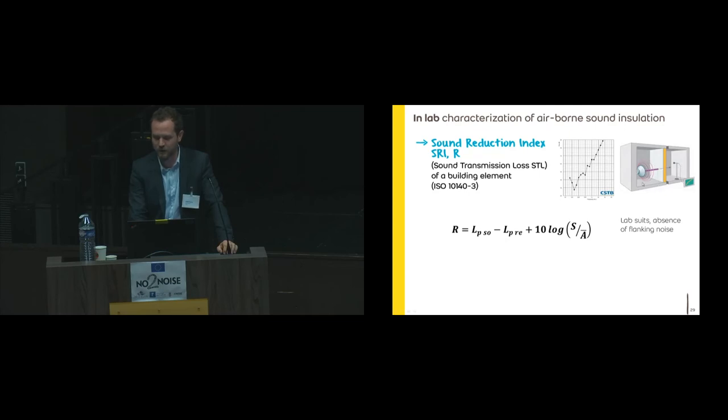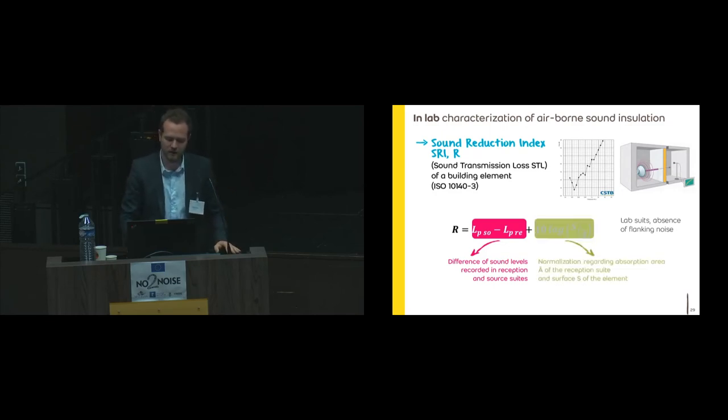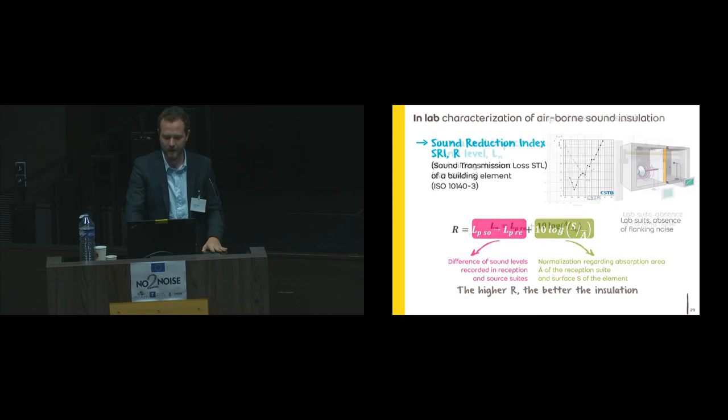How do you do these calculations? You have a source in a reverberant room and a microphone, and you measure the pressure in the two rooms—in the source room and in the reception room. You do the difference of the level between the two noise levels in the two rooms, and you do a normalization by the surface S. This equation—I don't know if you're familiar with that—comes from the hypothesis of the diffuse field that says you can consider it's the plane wave hypothesis in random incidence and that the intensity can be written as the square of the pressure on ρc. Then, if you want to calculate the power, you multiply by the surface. The higher the R, the better the insulation.